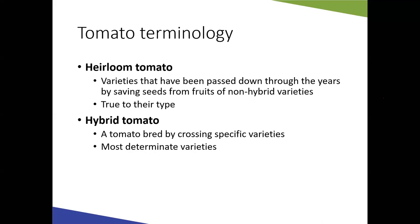Hybrid tomatoes are produced by crossing specific varieties to achieve desired traits. They do not come back true to form — if you save seed from a hybrid tomato, the plant you get next year will not be the same as the plant you had previously. That's one of the main differences between heirlooms and hybrids.